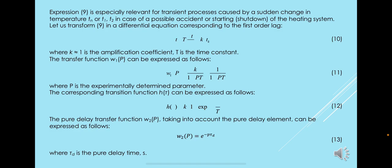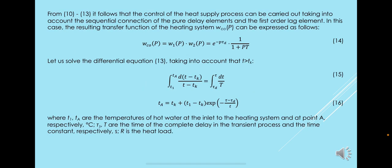Where K≈1 is the amplification coefficient and T is the time constant. The transfer function W1(P) can be expressed as follows, where P is the experimentally determined parameter. The corresponding transition function H(t) can be expressed as follows. The pure delay transfer function W2(P), taking into account the pure delay element, can be expressed as follows, where τD is the pure delay time, S, from 10 to 30 seconds.